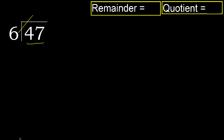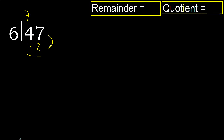But not greater. 6 multiplied by 8 is 48. 48 is greater. Multiply by 7: 42 is not greater. OK, subtract — 5.